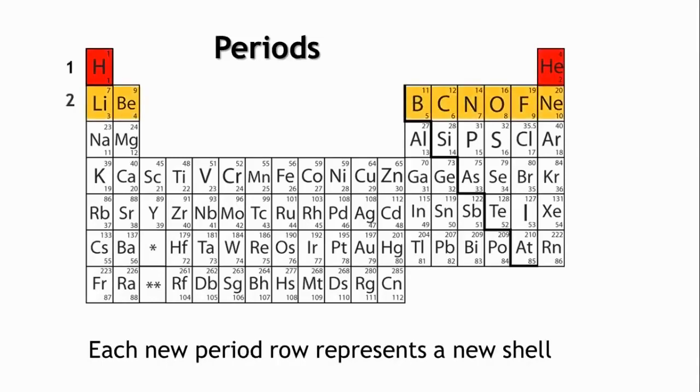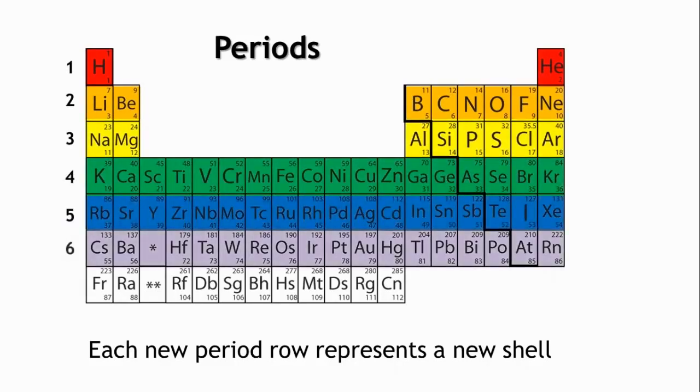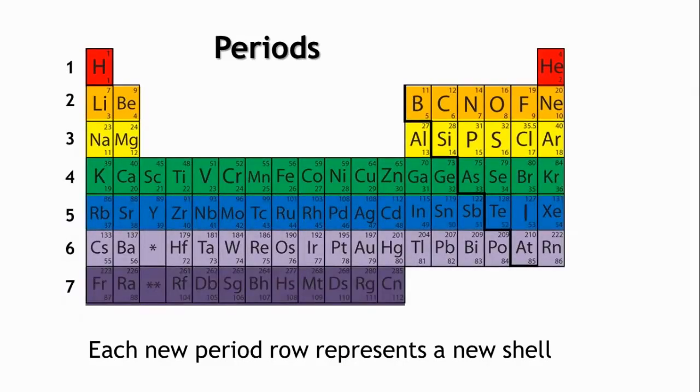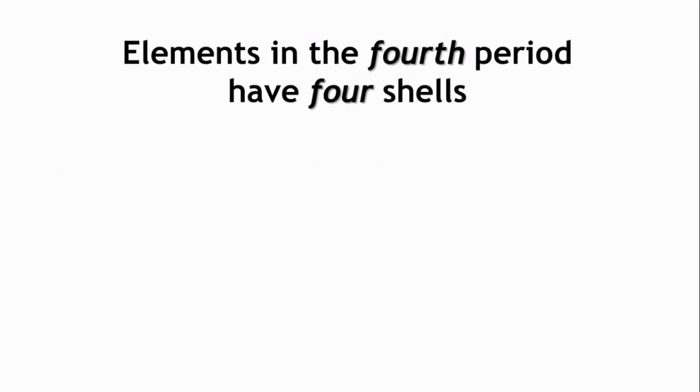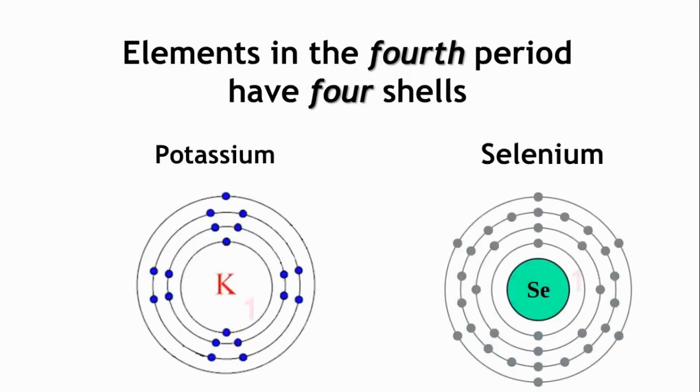Elements in the first period have one shell, and as we go down, the shells increase. Hydrogen is in the first period. It has one shell. Potassium is in the fourth period and has four energy shells, as do all the other elements in this period.